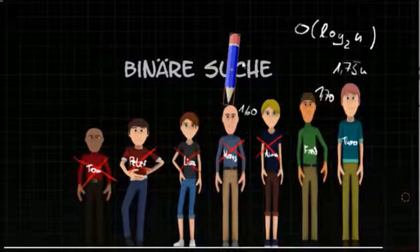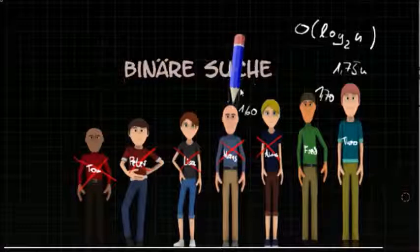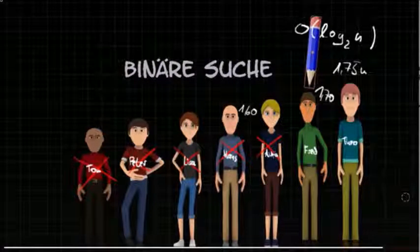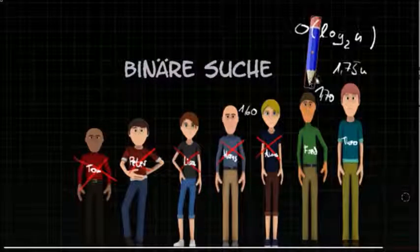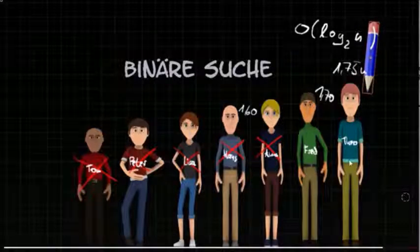First I looked at Hans and excluded those persons. Then I checked Fred and excluded Anna. And with the 3rd step I found Theo.